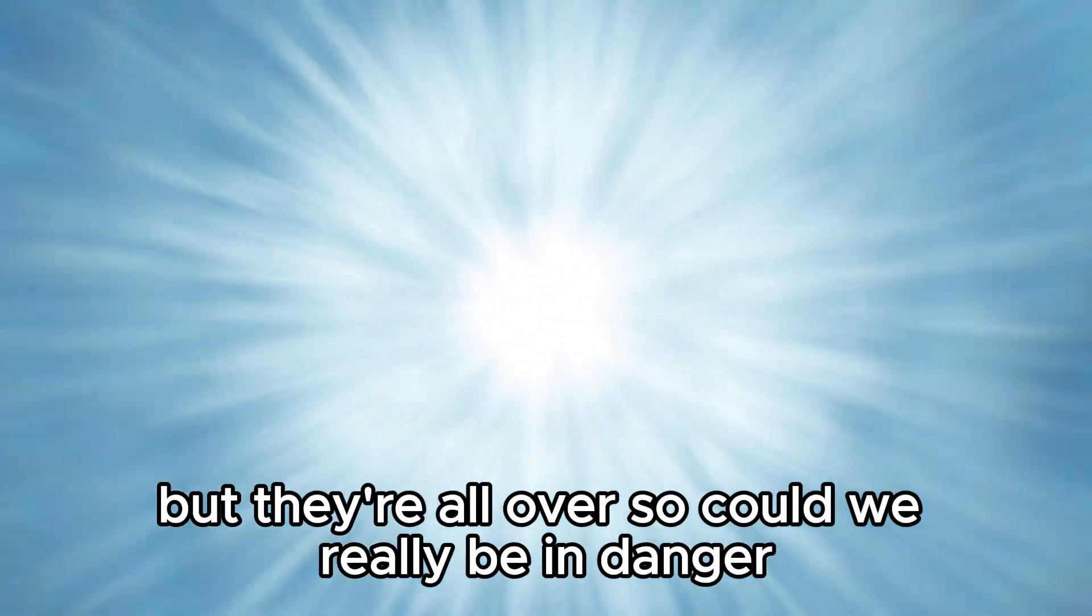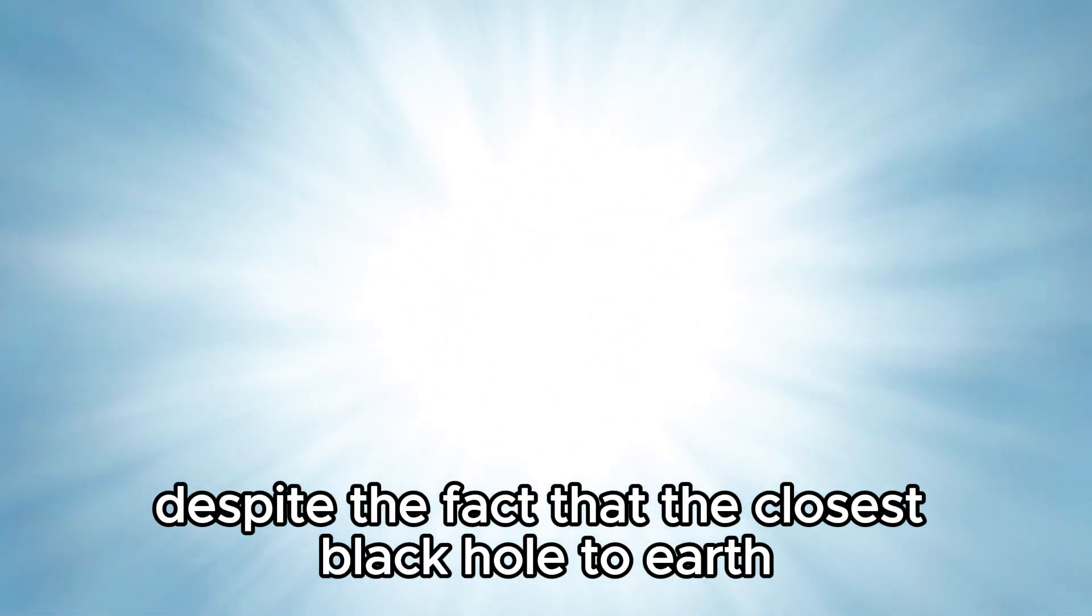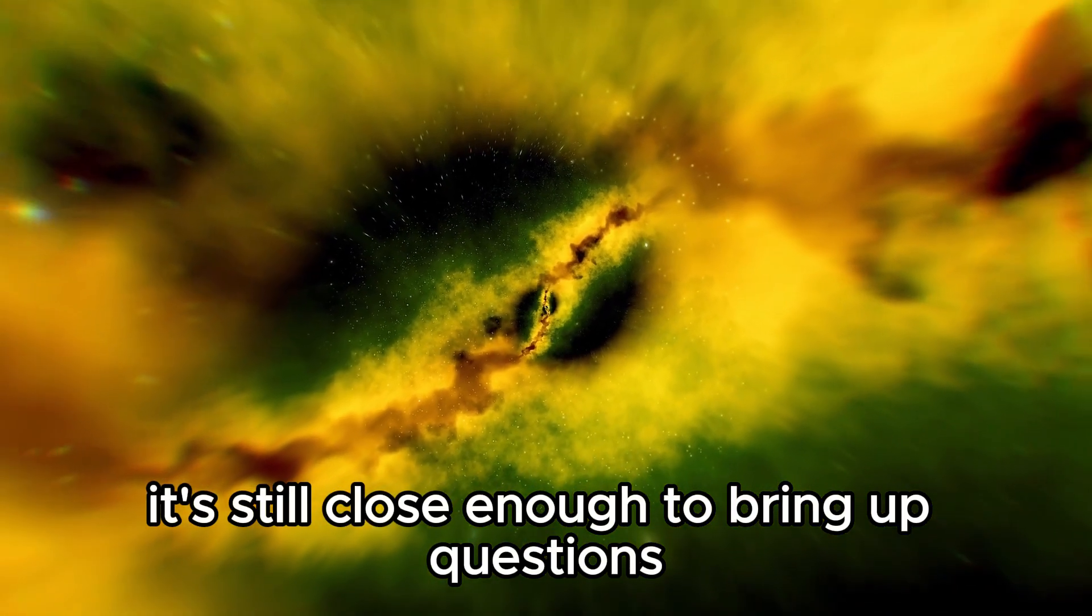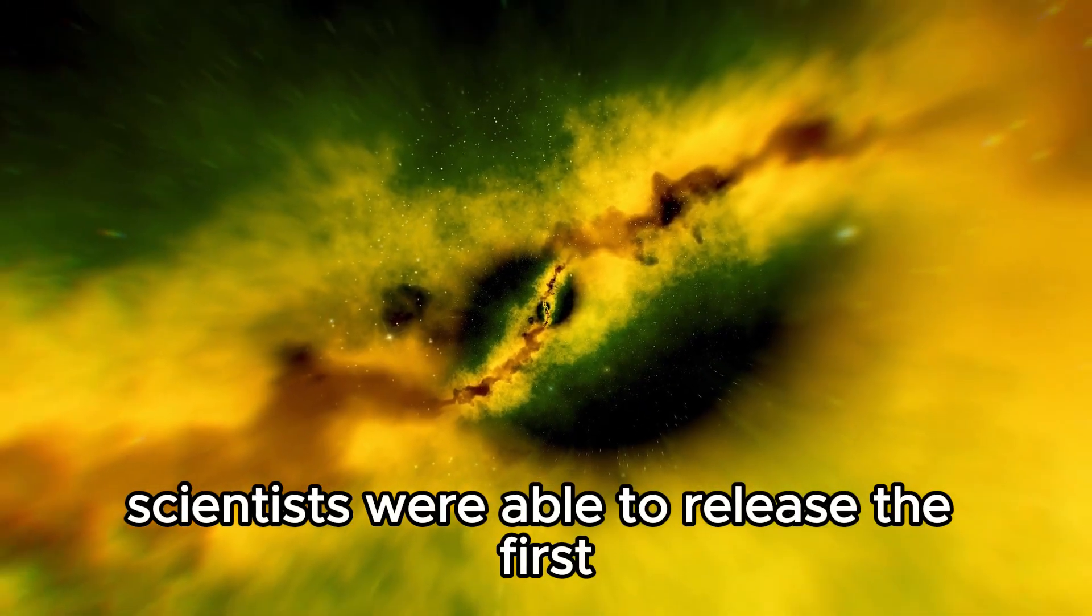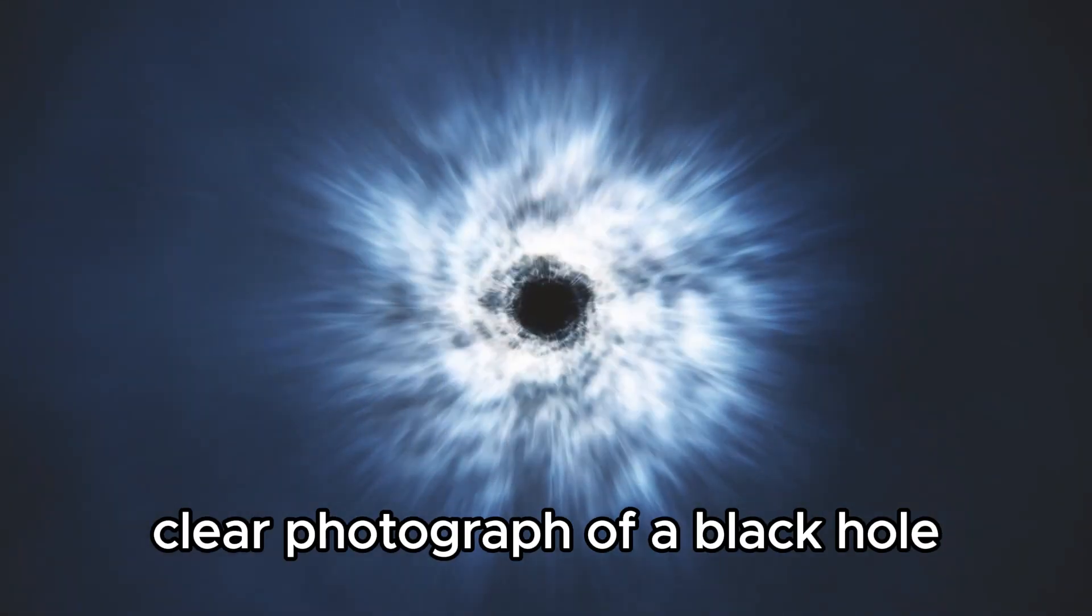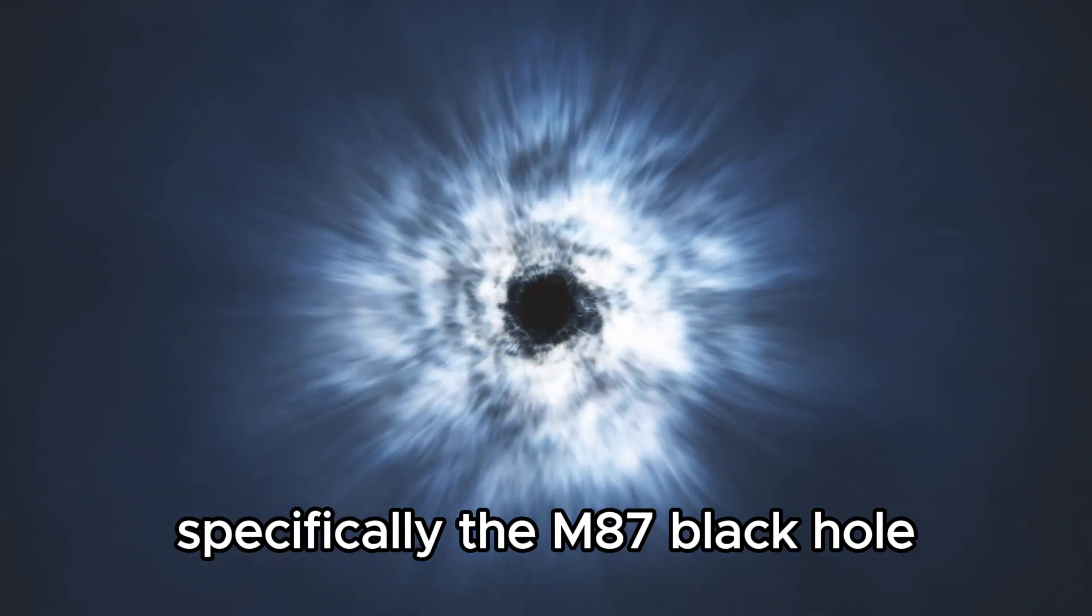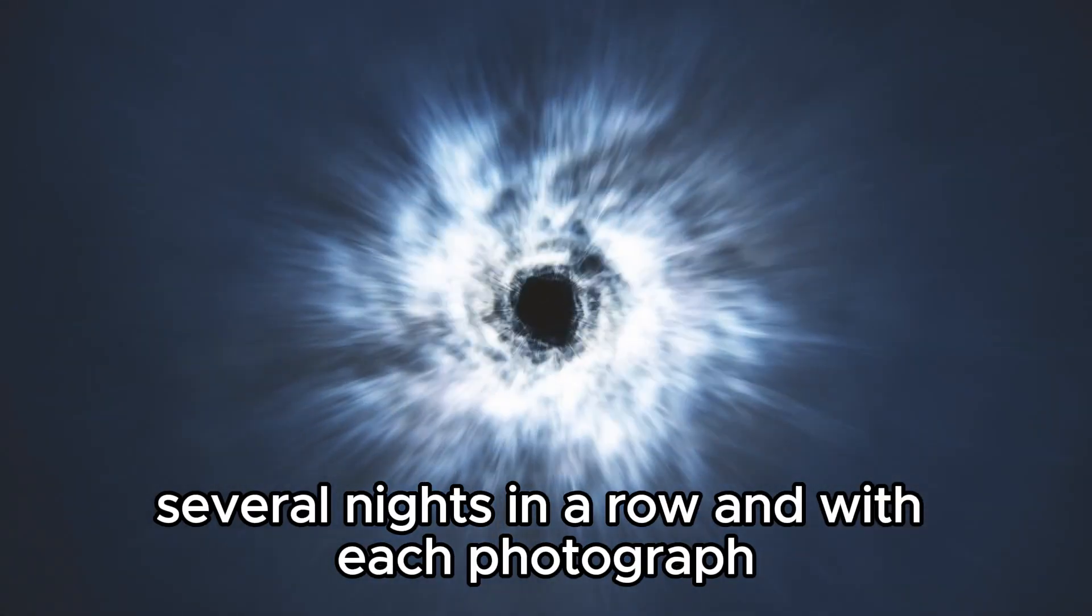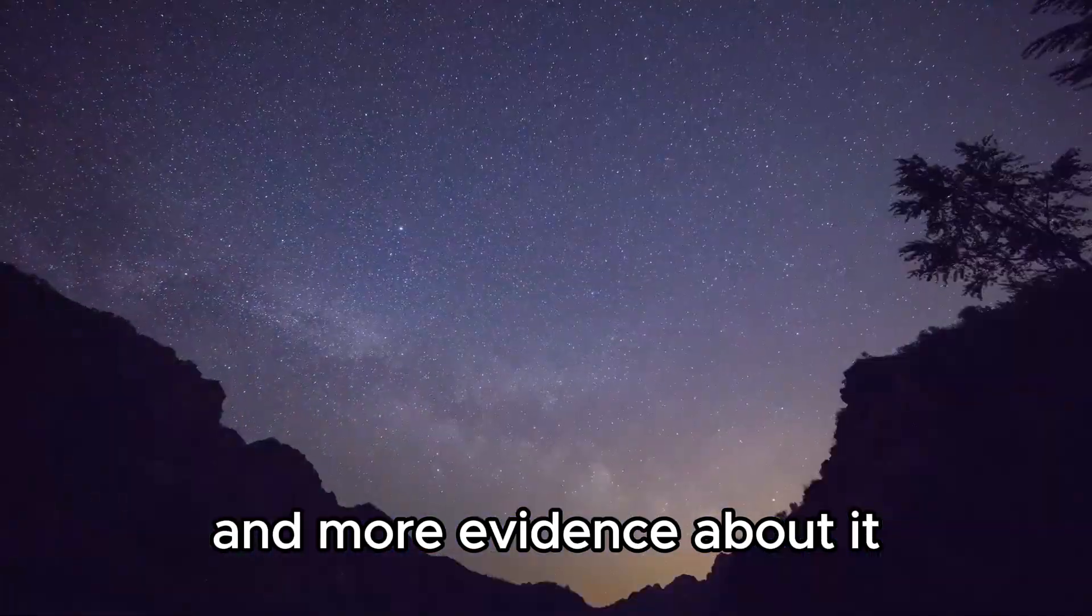But they're all over, so could we really be in danger? Despite the fact that the closest black hole to Earth is 1,500 light years away, it's still close enough to bring up questions. In 2021, scientists were able to release the first clear photograph of a black hole, specifically the M87 black hole. This black hole was photographed several nights in a row, and with each photograph, the researchers gathered more evidence about it.